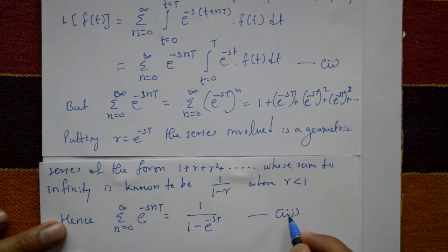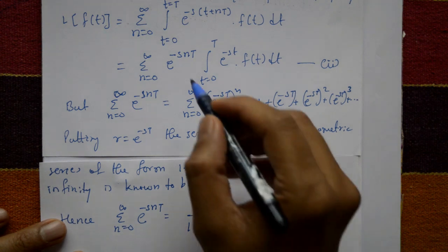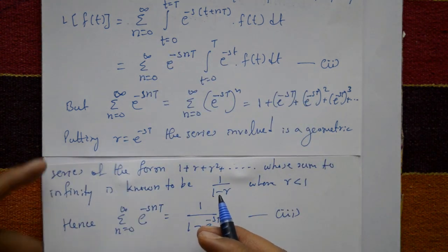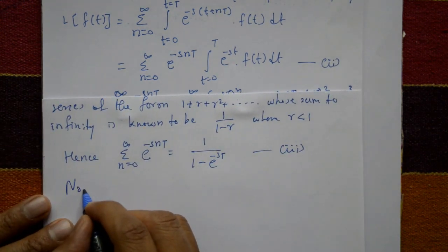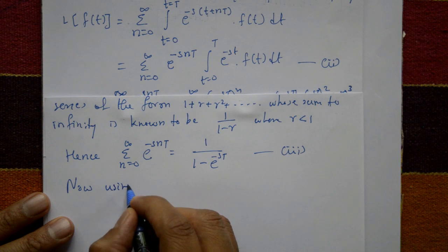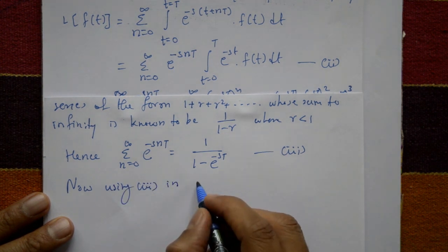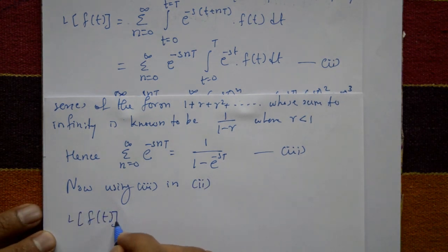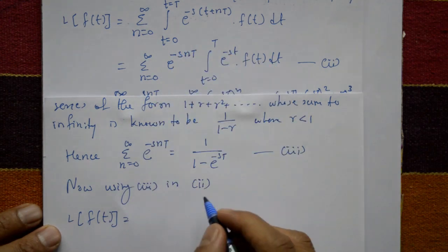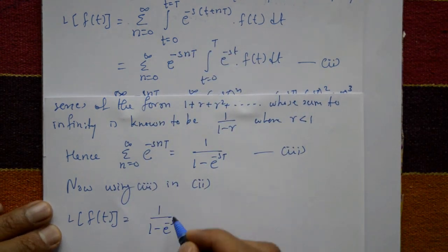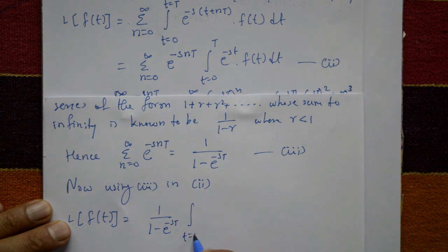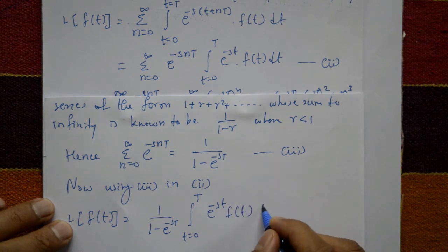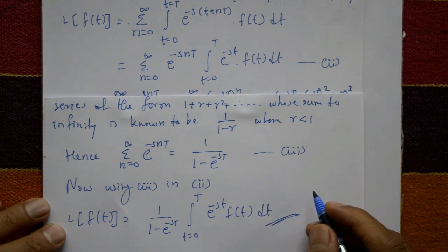Substituting equation number three into equation number two, the Laplace of f(t) becomes 1 upon (1 minus e raised to minus sT) times the integration from t = 0 to T of e raised to minus st times f(t) dt. This is the required result — the periodic property of the Laplace transform has been proved.